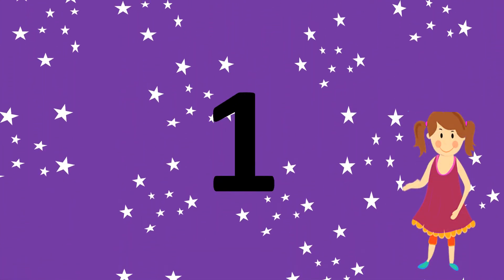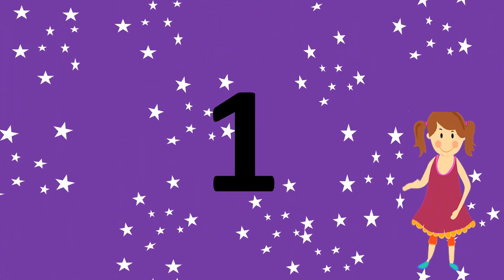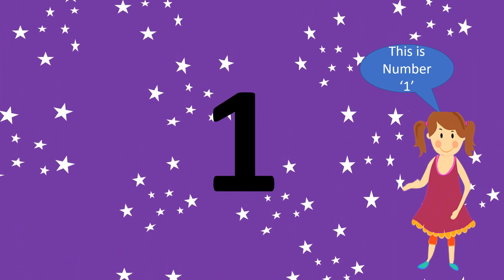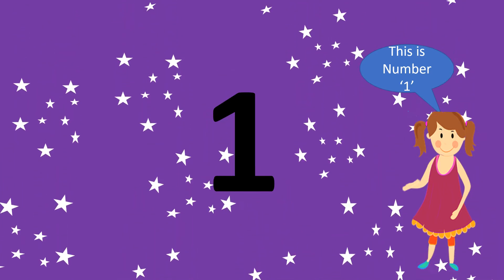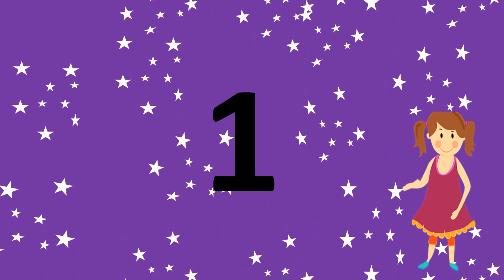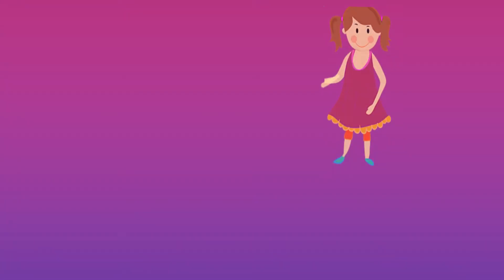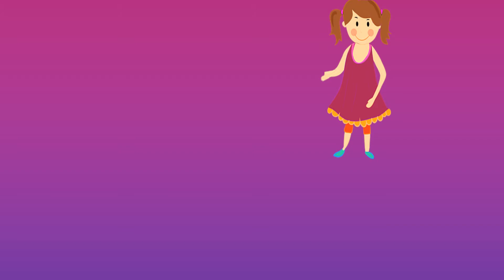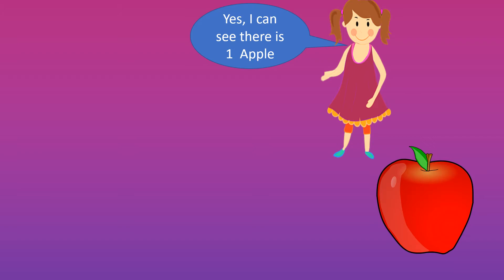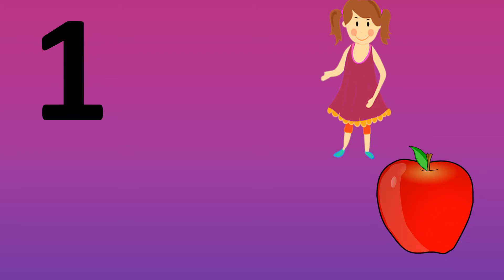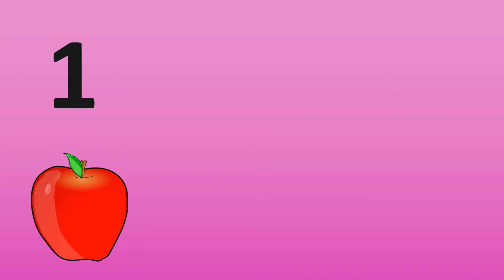Let's start with our first number. Sara, can you tell me which is this number? This is number 1. Great. So let's now see how we spell it. Before we start, can you see and tell me how many apples are there? I can see there is one apple. You are correct — there is one apple. So now let's spell the number 1.